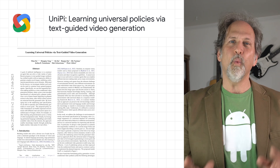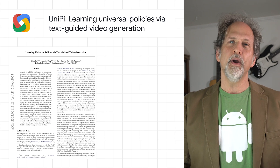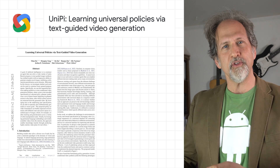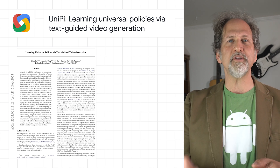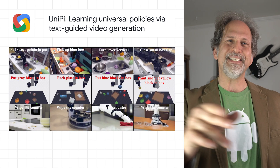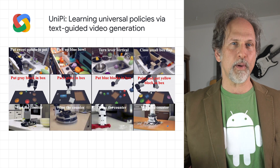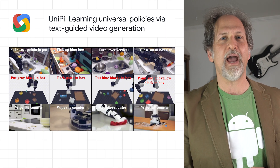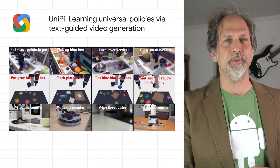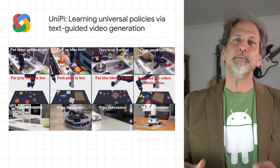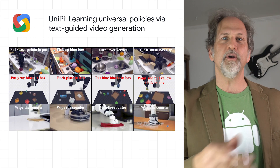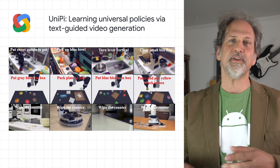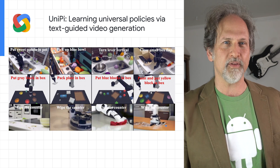Over in AI, we released a paper that proposes a universal policy that addresses environmental diversity and reward specification challenges, leveraging text for expressing task descriptions and video as a universal interface for conveying action and observation behavior in different environments, enabling the use of language and video as a universal control interface for generalizing to novel goals and tasks across diverse environments.